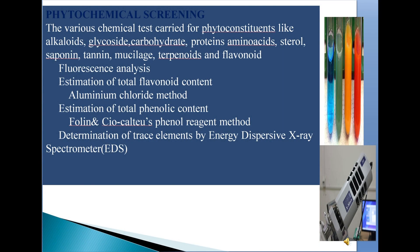Various phytochemical studies — phytochemical screening — involve chemical tests carried out for phytoconstituents like alkaloids, glycosides, carbohydrates, proteins, amino acids, sterols, tannins, mucilages, terpenoids, and flavonoids. Fluorescence analysis includes estimation of total flavonoid content by the aluminum chloride method, estimation of total phenolic content using the Folin-Ciocalteu reagent method, and determination of trace elements by EDS — energy dispersive X-ray spectrometry.